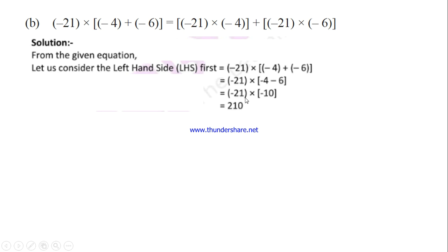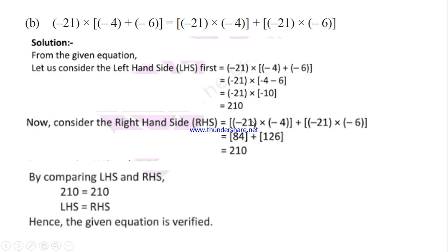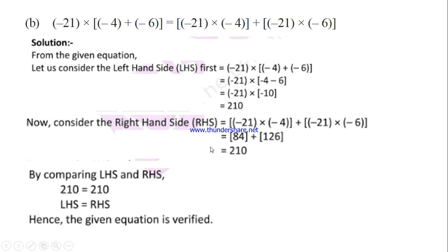Multiplying: minus into minus gives plus, so 21 into 10 equals 210. For the right hand side: (-21) into (-4) — minus into minus is plus, so 21 into 4 equals 84. Then (-21) into (-6) — minus into minus is plus, so 21 into 6 equals 126. Adding: 84 plus 126 equals 210. LHS and RHS values are same, so the given equation is verified.